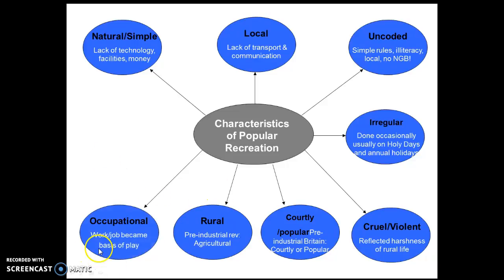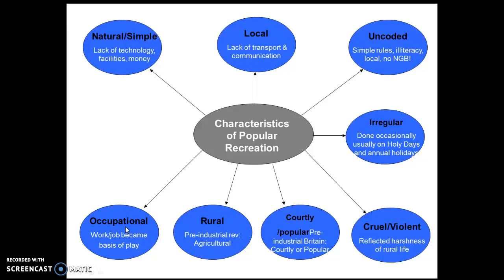Another characteristic is occupational — there was a massive link between some activities people did and their work. Popular recreation became occupation in some activities. For example, rowing became an activity the lower class undertook; they were known as watermen who rowed people across the Thames in London like a taxi service. There were also footmen — lower class peasants who worked for rich families carrying notes, since there was no other way of transporting mail — but they were also effectively training in cross-country running.